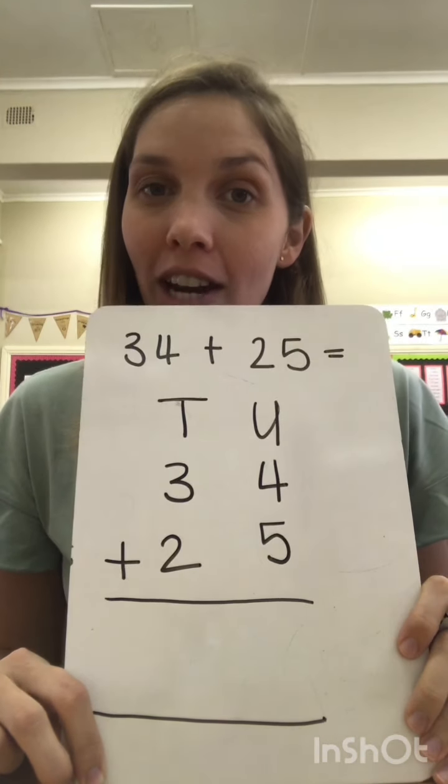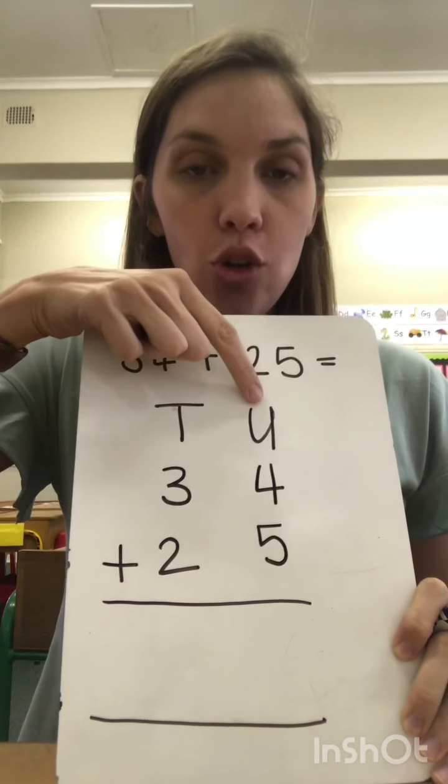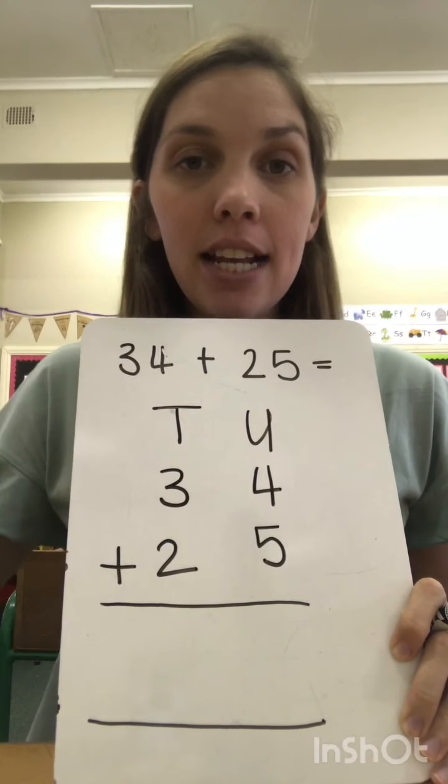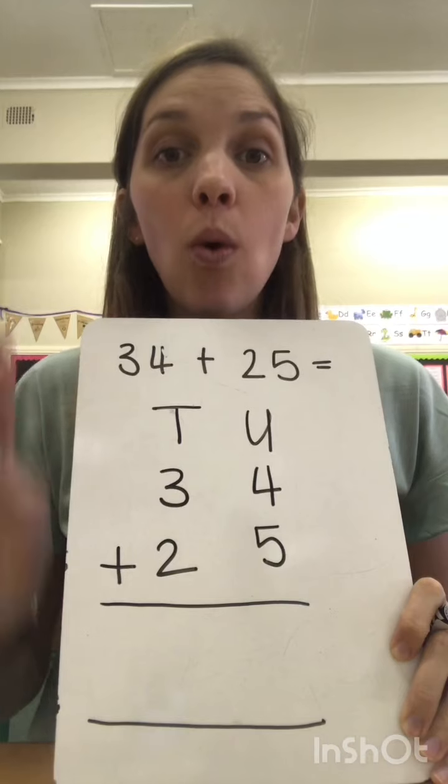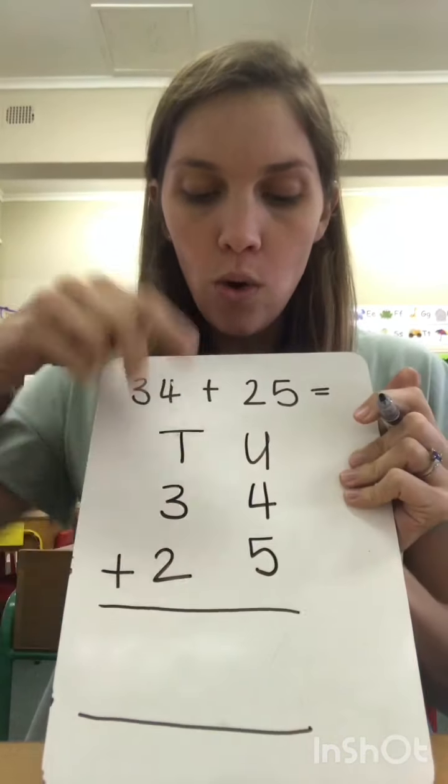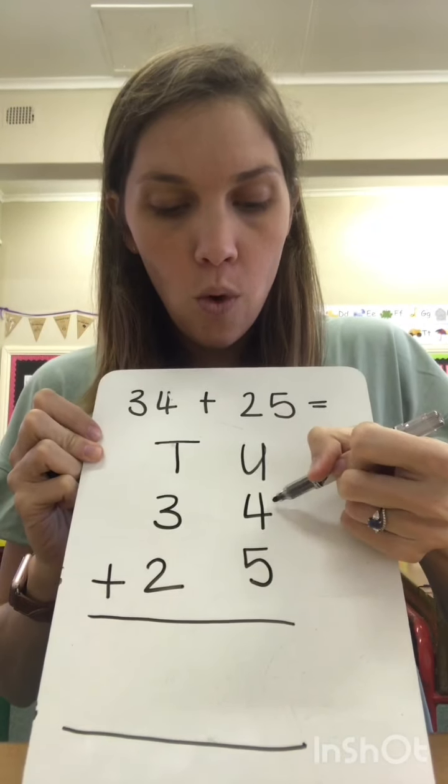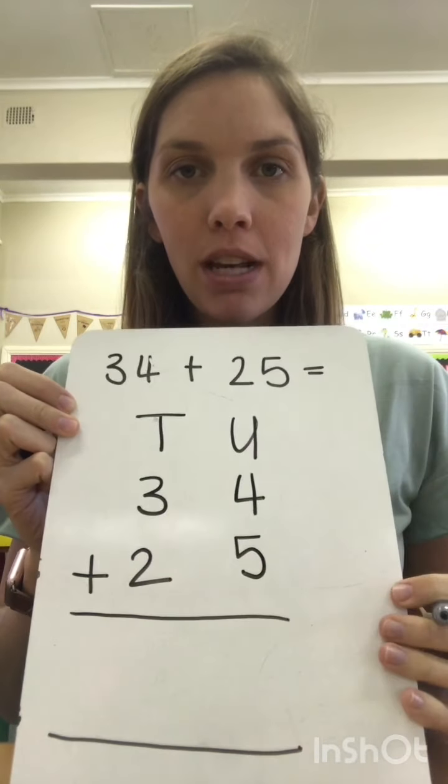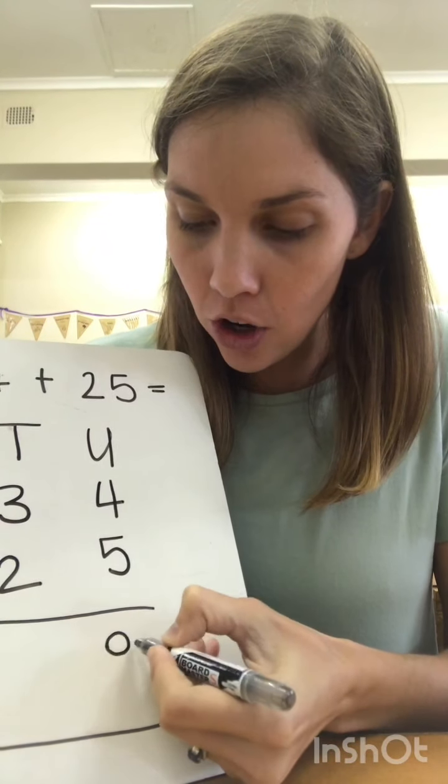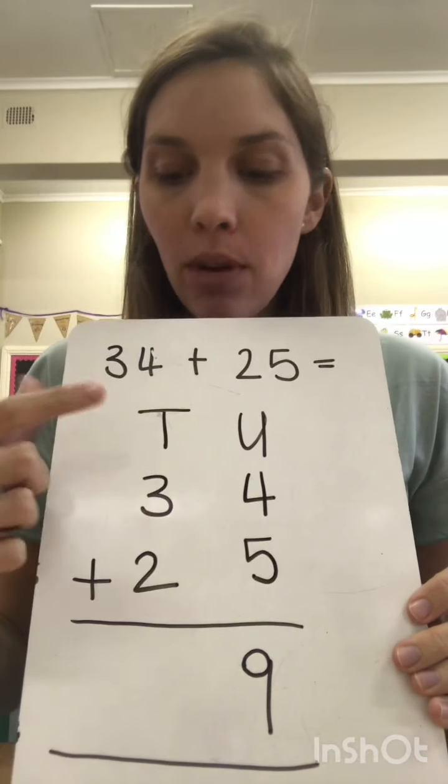Now comes the fun part. This is when we start adding. When we do soldier sums we always start with the units column, no matter how big our number is. If it's got hundreds, tens, units, thousands, hundreds of thousands, we always start with the units column. So let's have a look in this units column. Ignore everything else, we're just looking at the units column. We've got 4 plus 5. What is 4 plus 5? Hopefully you know 9. So underneath here we are going to write a 9. Now we've finished with that one and we can move on.